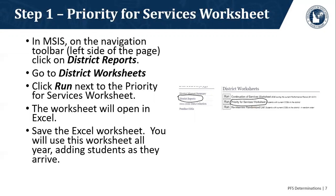Step one: the priority for services worksheet. This is in MSIS. When you get into MSIS on the navigation toolbar on the left side of the page, you will see your district name and below that your district migrant summary and district reports. Click on district reports. On the right-hand side you'll see a list of all available reports. The second section is district worksheets — go to the one that says 'Priority for Services Worksheet' and click on it. This will run an Excel spreadsheet. You will save this Excel worksheet to use for the entire year, running this report once a year.